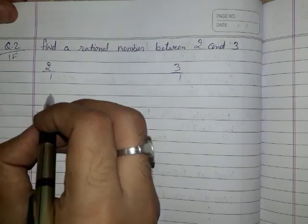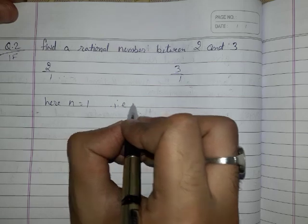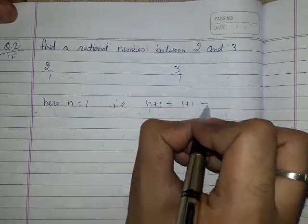Here n is equals to 1. That means n plus 1 is equals to 1 plus 1 is equals to 2.